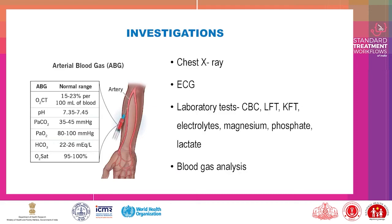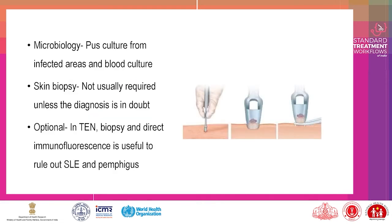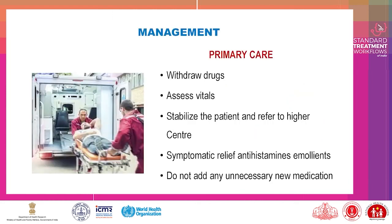Additional SCORTEN factors include initial detachment of skin, serum urea greater than 60 mg/dL, serum bicarbonate, and blood glucose levels. Investigations include arterial blood gas (ABG), chest X-ray, ECG, and laboratory tests: CBC, LFT, KFT, electrolytes, magnesium, phosphate, lactate, blood gas analysis, microbiology — swab culture from infected area and blood culture. Skin biopsy is not usually required unless the diagnosis is in doubt.